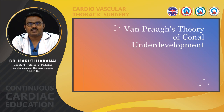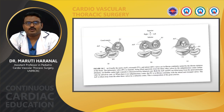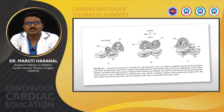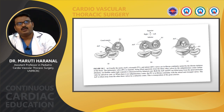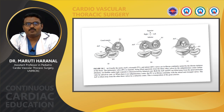Wanprace's theory of conal underdevelopment suggests that during normal development of the heart, we have two coni — the sub-aortic and the sub-pulmonary. As development progresses, the sub-aortic conus is resolved, committing the aorta to the left ventricle, and the sub-pulmonary conus continues as infundibulum in the normal heart. In cases of double outlet right ventricle, the sub-aortic conus is either over-expressed or under-absorbed, so both coni persist, committing the aorta to the right ventricle, leading to DORV.